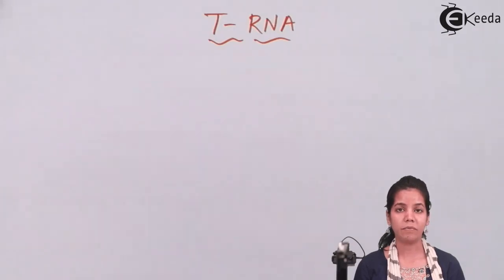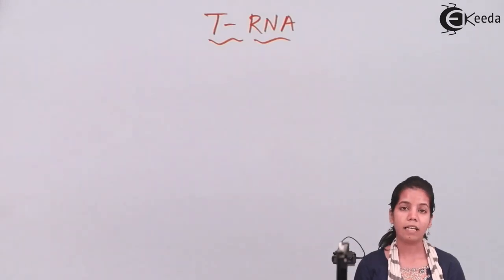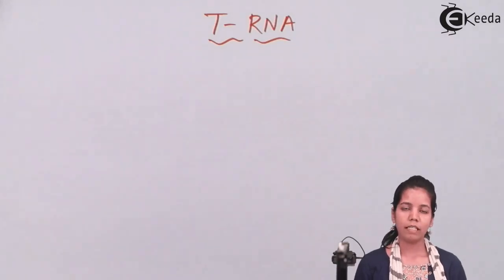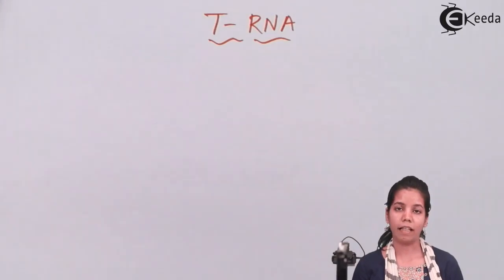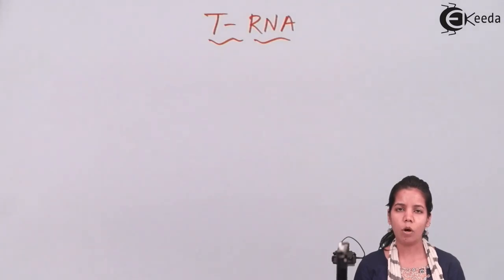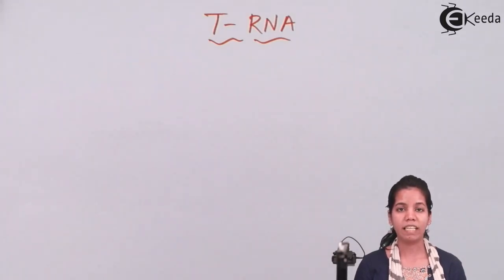tRNA has various arms: it has the DHU arm, the acceptor arm, and the anticodon arm, each performing certain functions. The structure of tRNA is called the cloverleaf structure, which is somewhat symmetrical to the alphabet T.